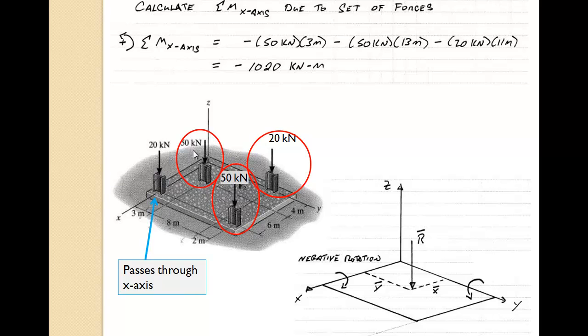So it cannot produce any moment. This 50 kilonewton load has a moment arm of 3, this 50 kilonewton load has a moment arm of 8 plus 2 plus 3 which is 13, and this 20 kilonewton load has a moment arm of 8 plus 3 for a moment arm of 11.